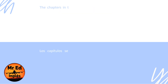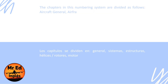The chapters in this numbering system are divided as follows: aircraft general, airframe systems, structures, propeller and rotor, power plant, and others.